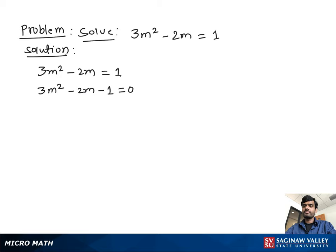To find the factors, multiply the coefficient of m squared, which is 3, with the constant negative 1. We get negative 3. The factors of negative 3 are 1 and negative 3.